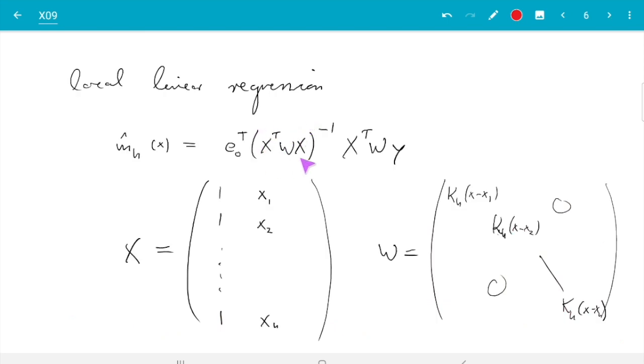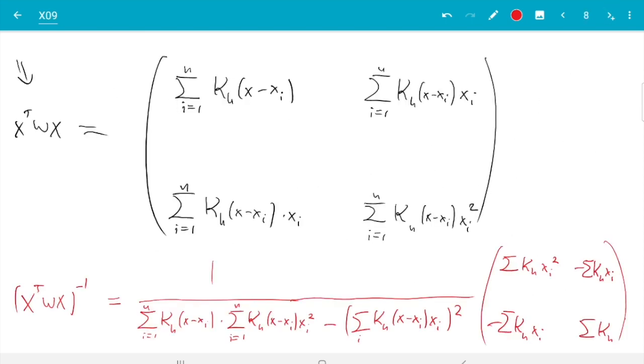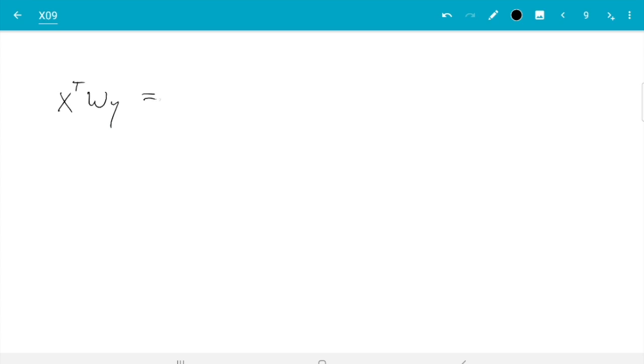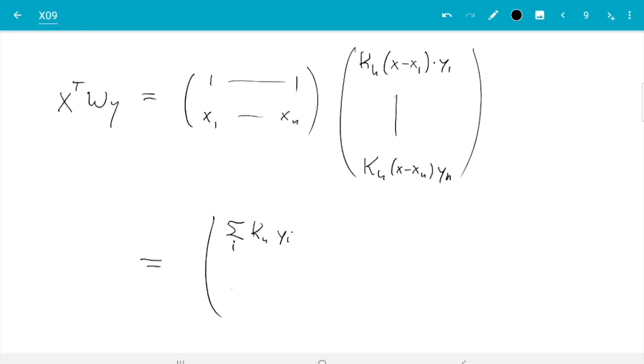And now we have done this. We need to multiply that to x transpose w y. So let's work out what's x transpose w y. x transpose w y is row of 1, row of x i. W's, well, w y we can maybe do in one go. So it's kh x minus x 1 times y 1 all the way down up to kh x minus x n y n. And that is a vector of length 2. And you see the first element is just 1 times that. So that's the sum, sum kh y i. And the second element is sum i kh x i y i. So we have this.